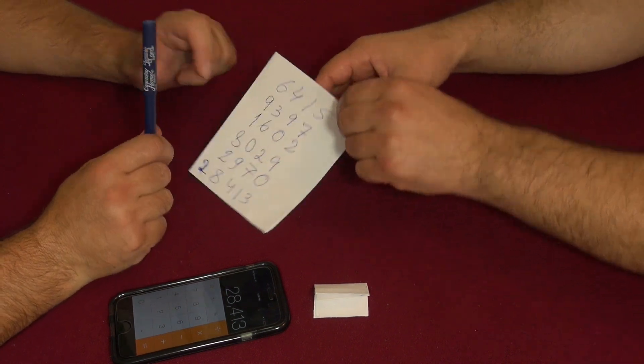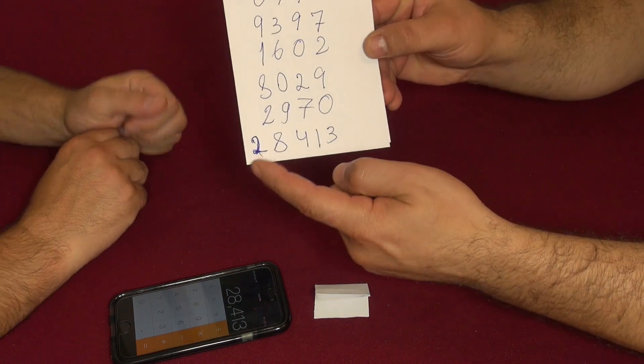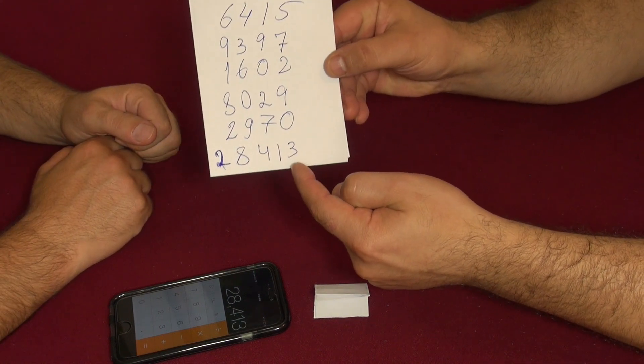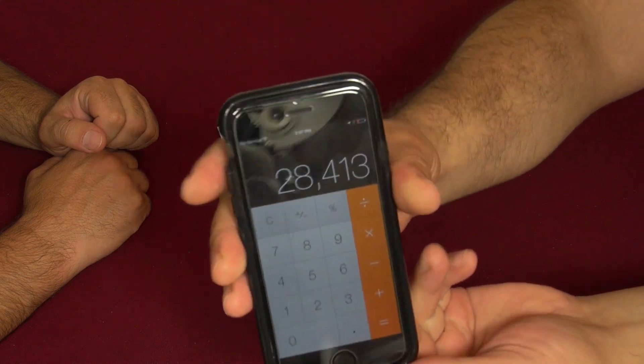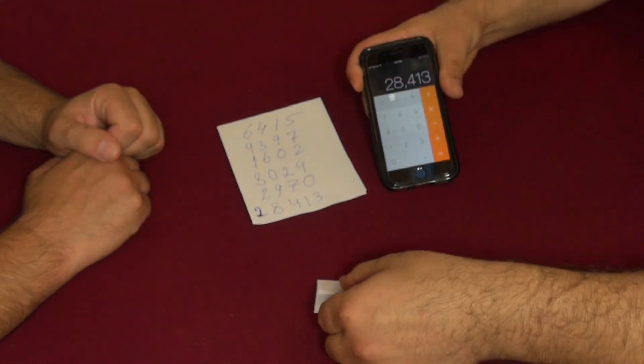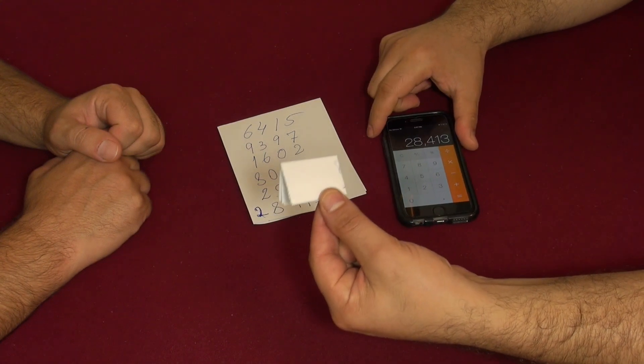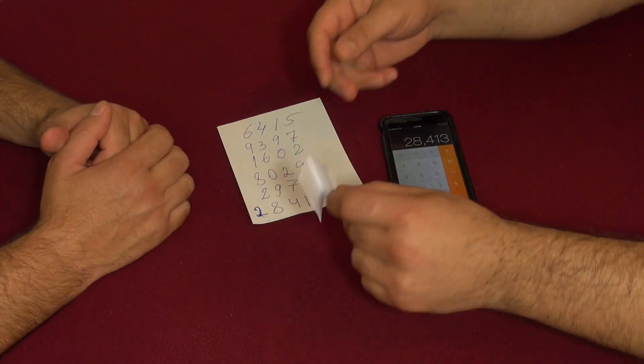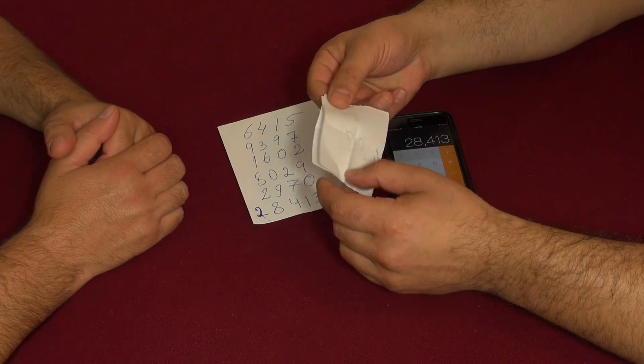Number 28413. You got the total number of 28413, and here's the calculator: 28413. Right. So you probably remember about this piece of paper. I do. So now let's open it and let's see what it says.